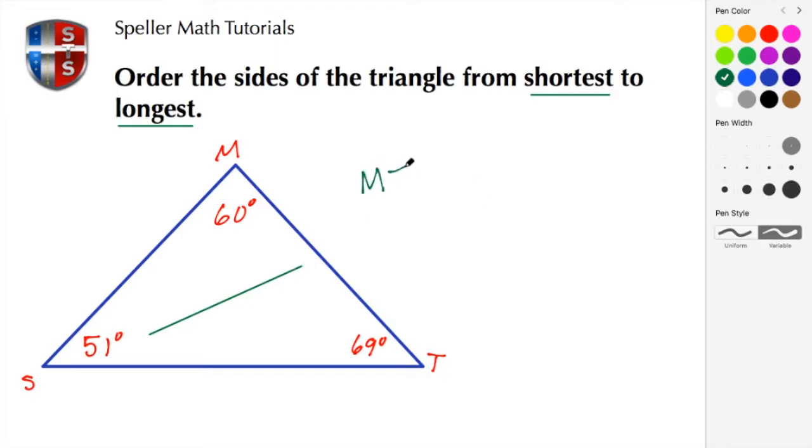So let's label MT first. The second one is now let's find the next largest angle. The next largest angle here we see is 60 degrees, and the side that is opposite the 60 degrees we see here is ST.